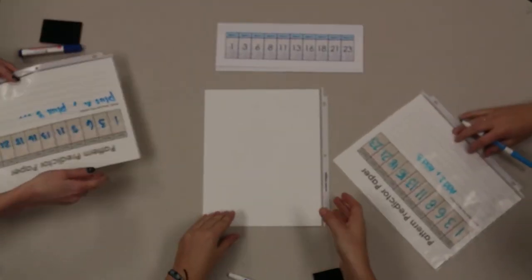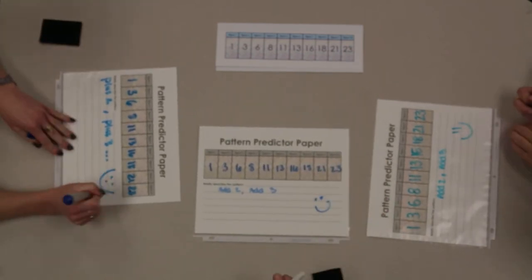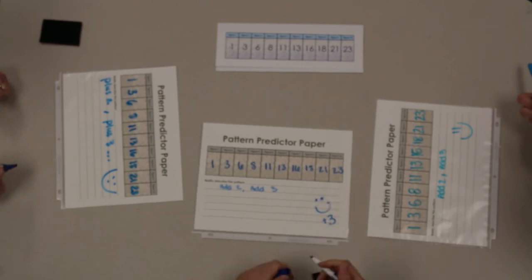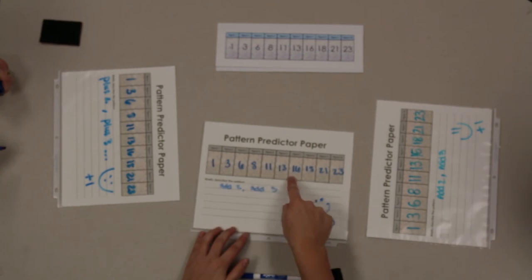The first pair to accurately submit their pattern explains the complete correct pattern and earns three points. The second pair to submit a correct pattern receives two points, and every other pair who submitted a correct pattern receives one point.